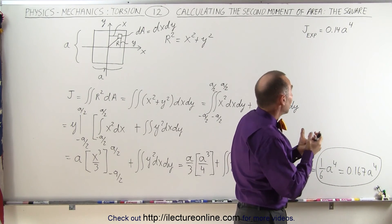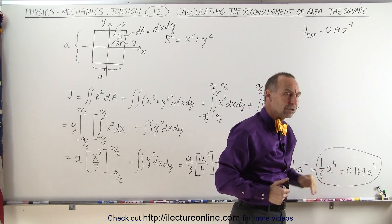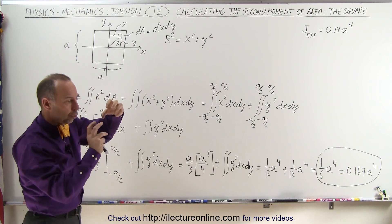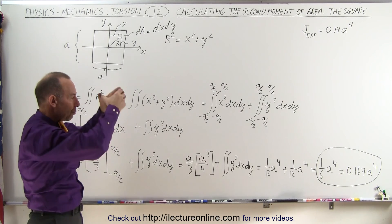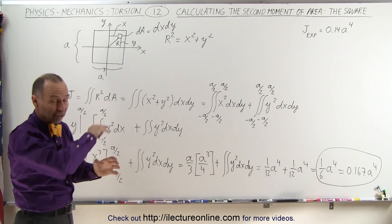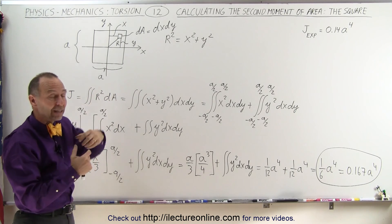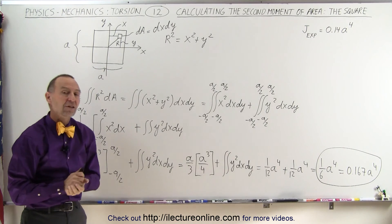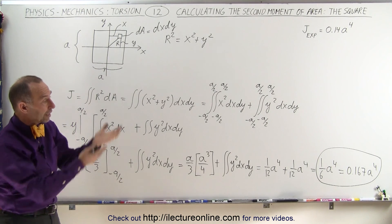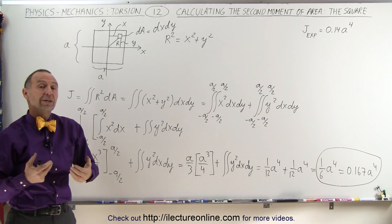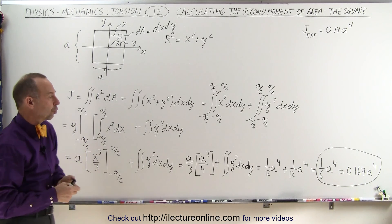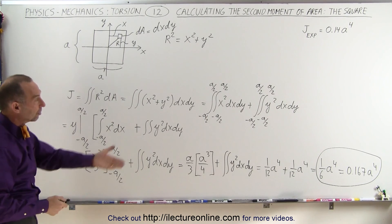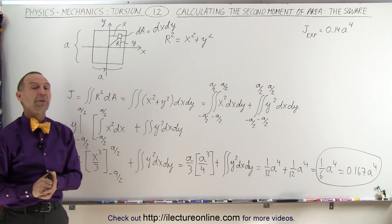So the actual measured result is a little bit less than the analytical result, which means that it's a little bit easier to twist what we call a beam that has a square cross-section. It's a little bit easier to twist it than we actually would have calculated. But notice we get a fairly close result, and so it gives us a fairly good idea what the actual torsional constant is. But this is how we do it analytically, and it's not that far away from the experimental result.